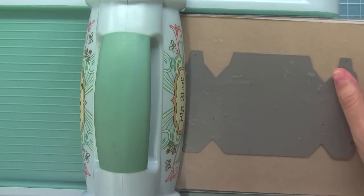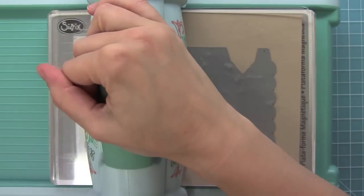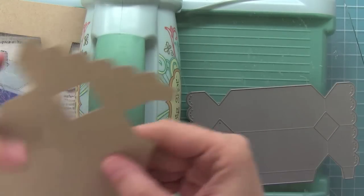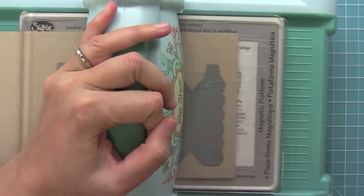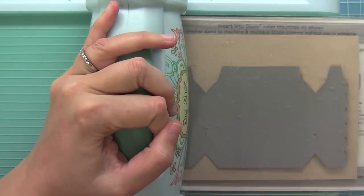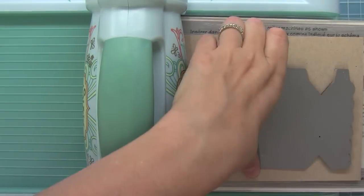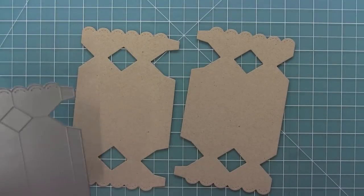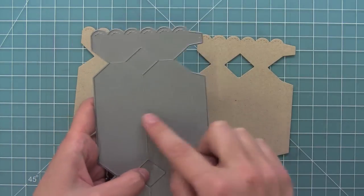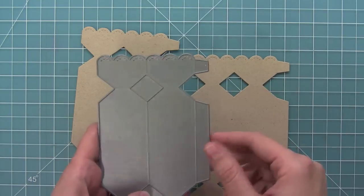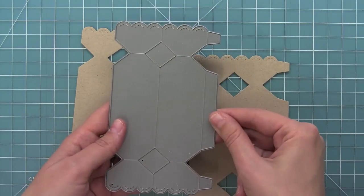The first thing you need to do is run your candy box die through your die cut machine. You'll see you have one piece, then you need to run it through a second time to assemble the whole box. Now I have my second piece all cut, and you'll see that the die actually creates the score lines for you, which makes putting it together really easy.